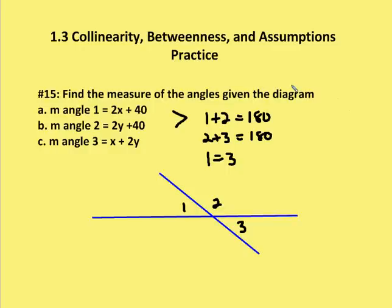We're given in problem 15 that the measure of angle 1 is equal to 2x plus 40, the measure of angle 2 is equal to 2y plus 40, and the measure of angle 3 is equal to x plus 2y. We can assume from the diagram that angle 1 plus angle 2 is a straight angle.